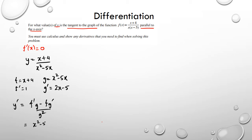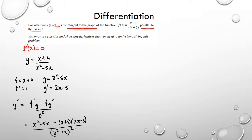Putting this together using f'g minus fg' over g squared, the numerator is x squared minus 5x, minus (x plus 4) times (2x minus 5), all over (x squared minus 5x) squared. Now somebody asked if they need to expand the denominator — don't expand anything until you've looked at the question fully, because you can waste a couple of minutes doing that unnecessarily.